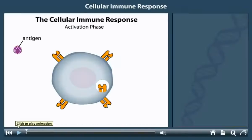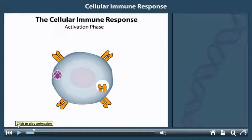The cellular immune response begins when an antigen, such as a virus, enters a body cell. Note that cancerous cells can also elicit a cellular immune response. The cell becomes infected by the virus.